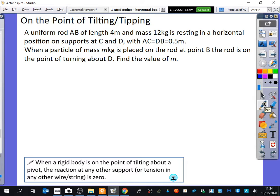So it says a uniform rod AB of length 4 meters and mass 12 kilograms. So it's uniform here. It's resting in a horizontal position on the supports at C and D with AC being equal to DB being equal to 0.5. So I'm just going to start drawing that to begin with. We've got our AB 12 kilograms. So it's bang in the middle because it's uniform. And the whole thing is 4.